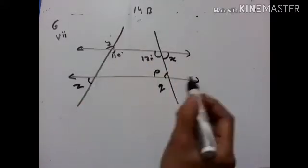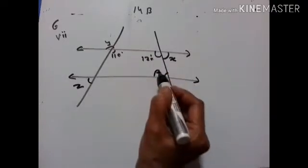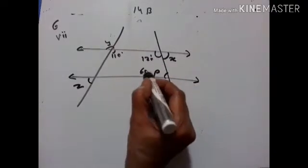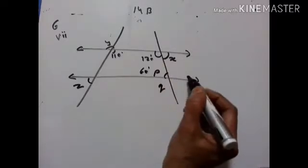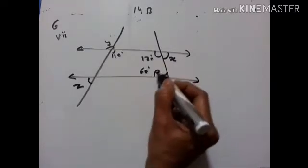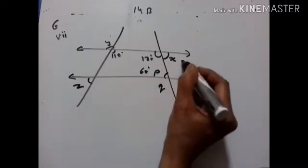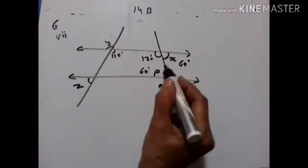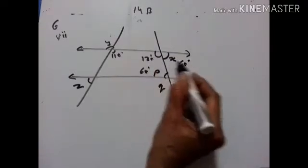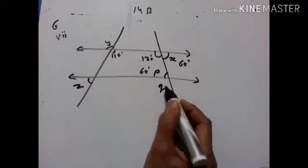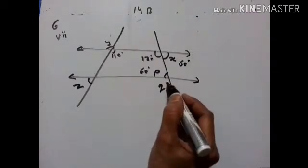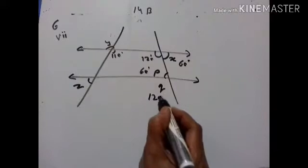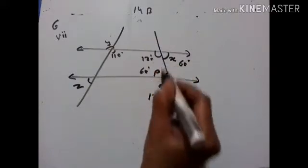These two lines are parallel. 120 and P — these two angles are co-interior angles, therefore P is equal to 60 degrees. X and P are alternate angles, so X is 60 degrees. Or these two are a linear pair: 120 plus 60 equals 180. 120 and Q — Q is also 120 degrees, corresponding angles.